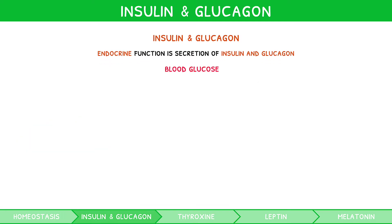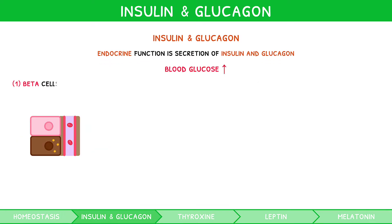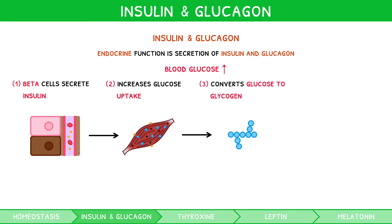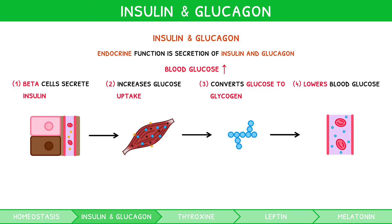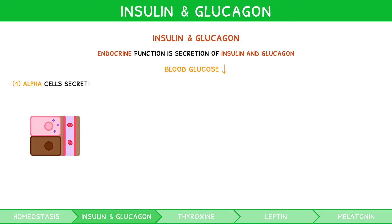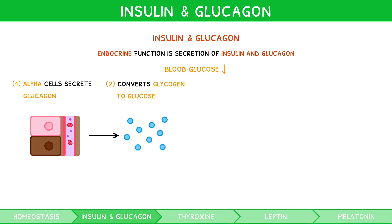When blood glucose concentration rises, beta cells secrete insulin. It works to increase glucose uptake by skeletal muscle and liver cells, converting it to glycogen, the storage form of glucose. Doing so lowers blood glucose concentration. When blood glucose concentration drops, alpha cells secrete glucagon. It does the opposite of insulin, i.e. breaks down glycogen to form glucose, raising blood glucose concentration.